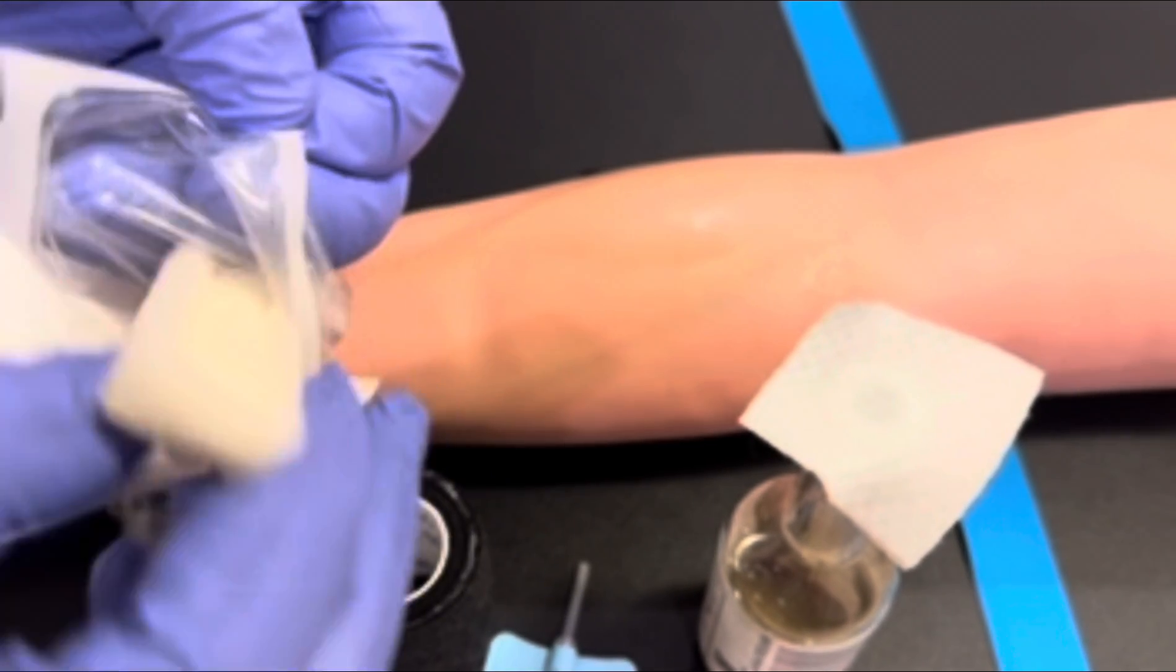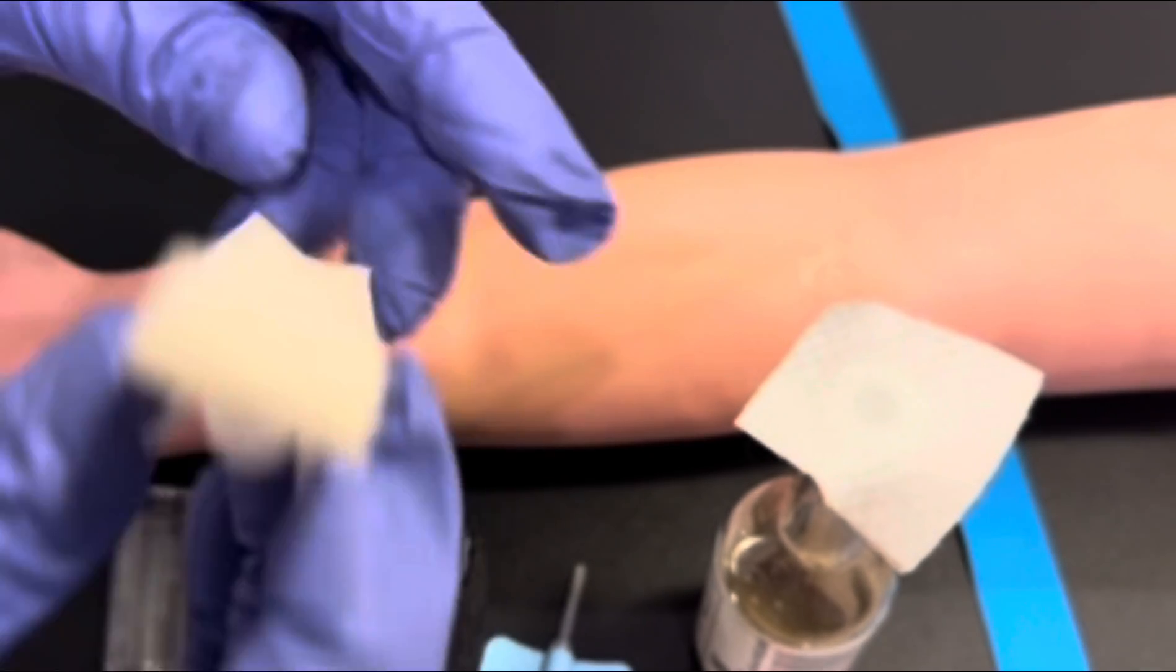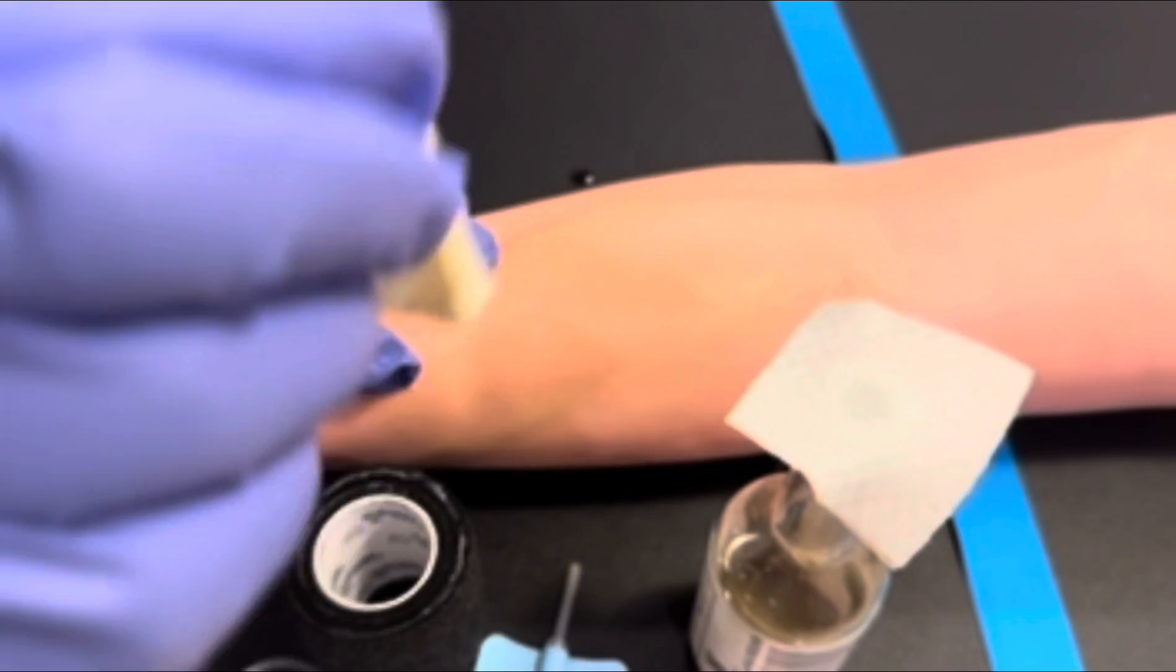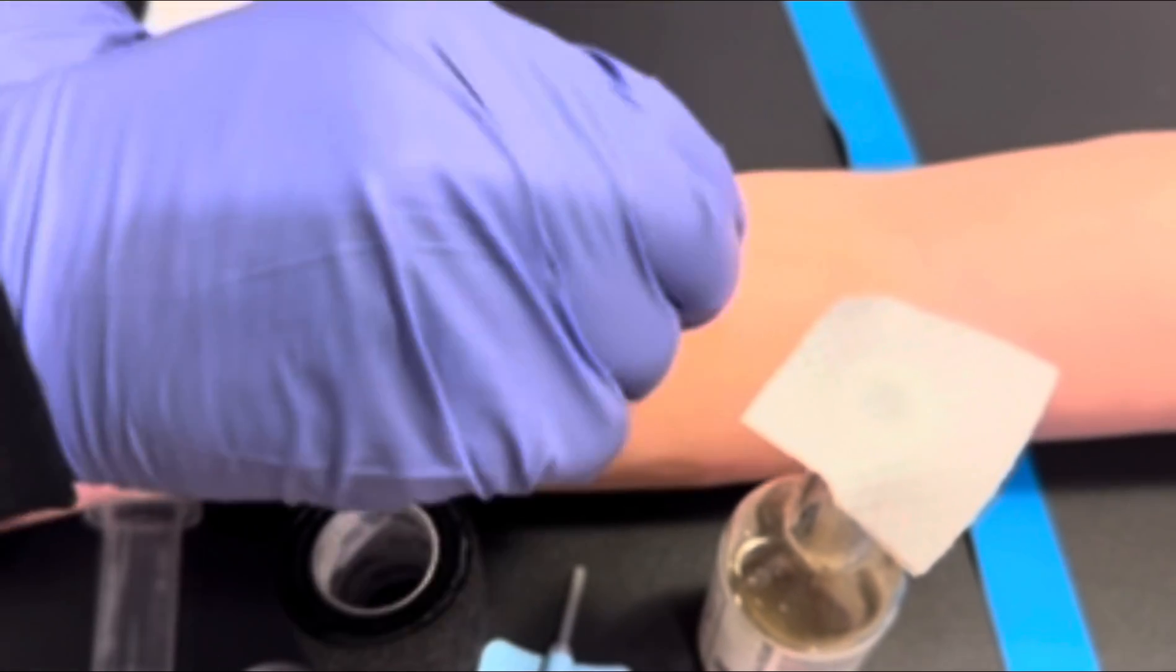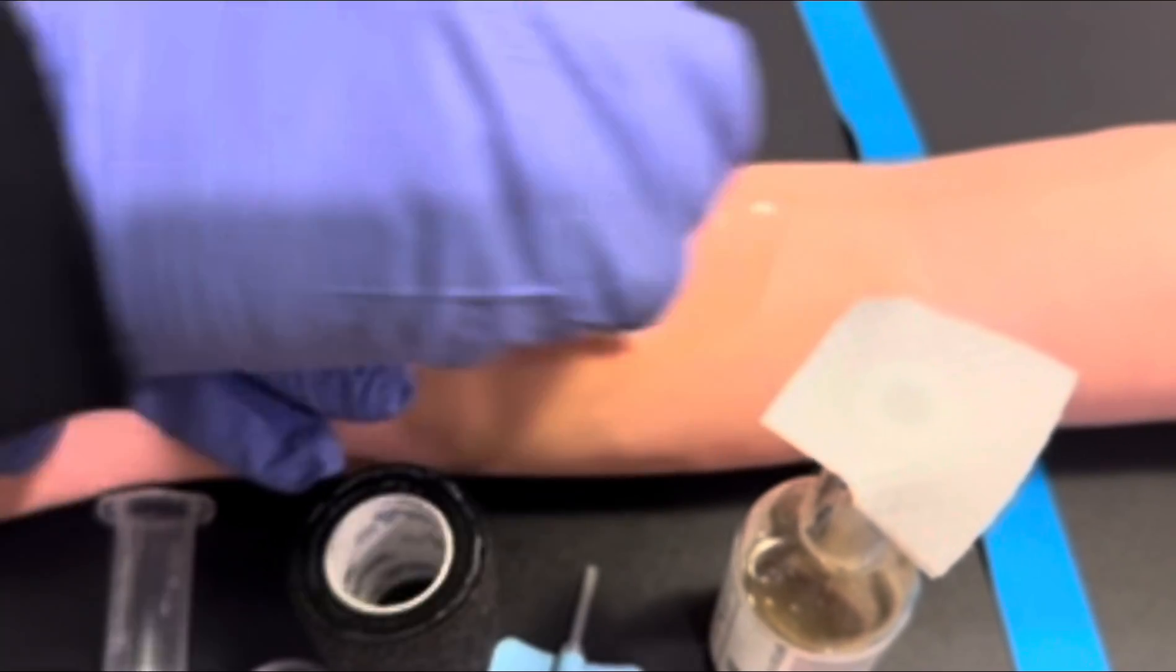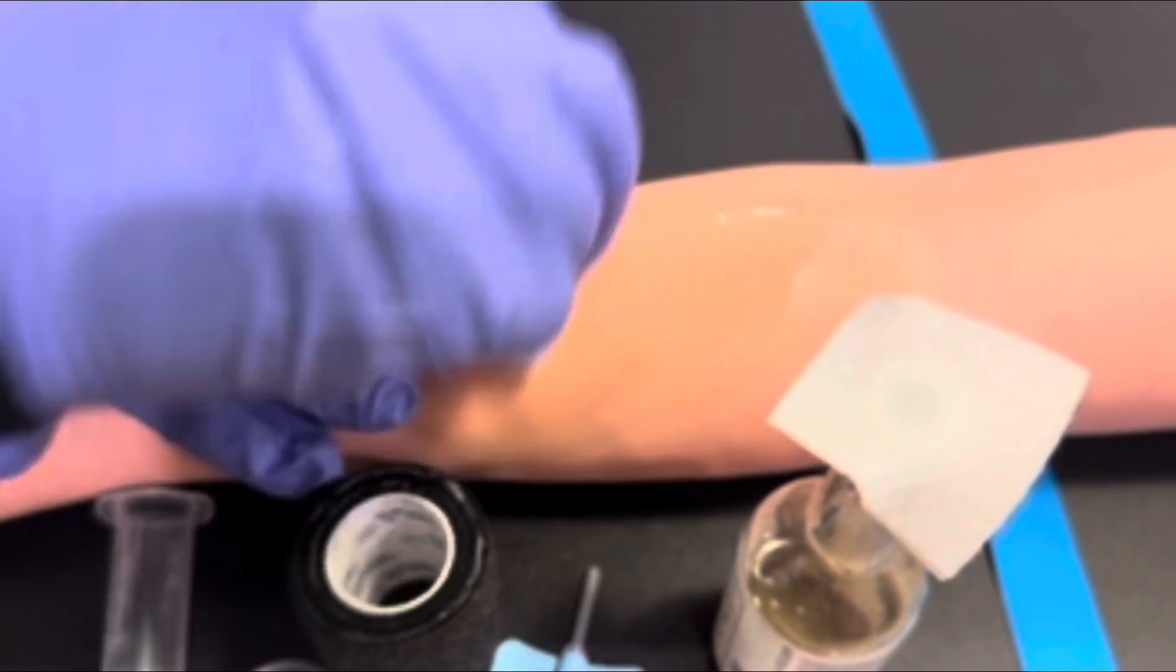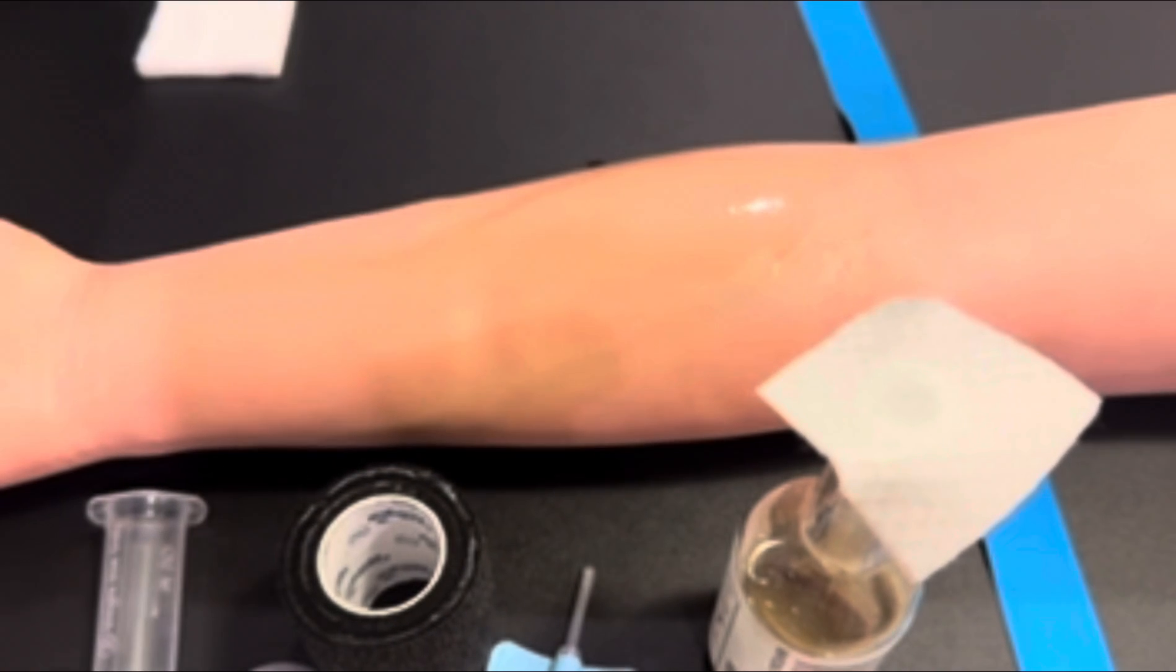This prep pad is called a chloroprep. It's a sponge applicator device. You'll snap the wings on the device, give it a little shake, and press and clean the site, or as we say, scrub and prep the site with the chlorhexidine prep pad for 20 seconds in concentric circles.